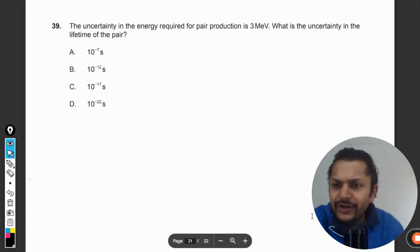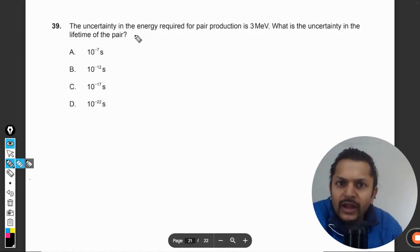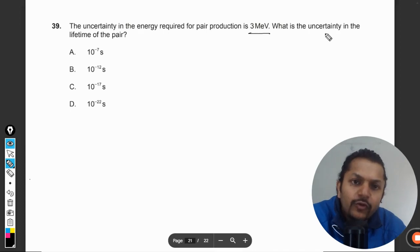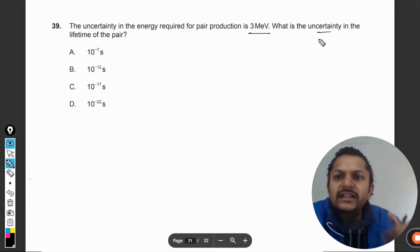Okay dear students, let us see what is there in this question. The uncertainty in the energy required for pair production is given as 3 MeV. What is the uncertainty in the lifetime of a pair?